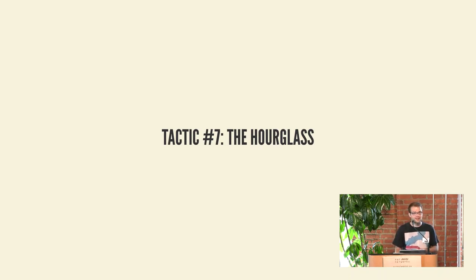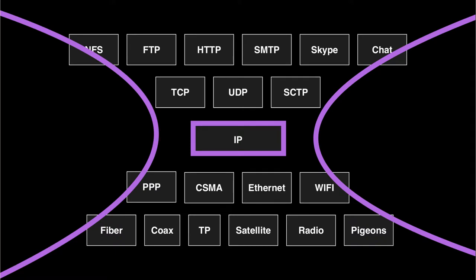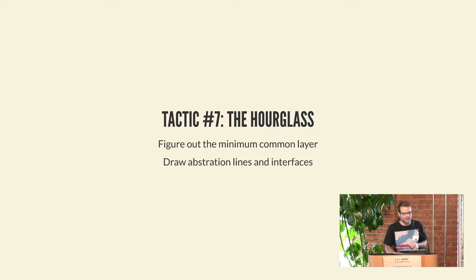Another tactic is the hourglass, which is less of a tactic of acting and more a way of designing things and thinking of networks. The hourglass model came up with IP because IP is just this really thin layer, and everything else is either built underneath or built on top. IP is the common layer between all nodes on the internet and all other networks. This allows you to put different physical pipes underneath — satellite internet was not conceivable when IP was conceived. It's basically about figuring out the minimal common layer, drawing abstractions and interfaces that parts underneath can rely on and parts above can rely on.